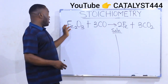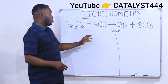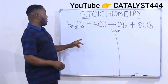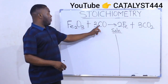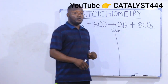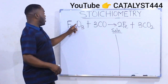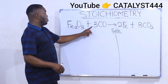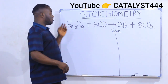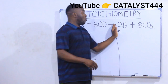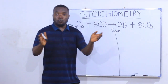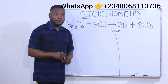On the left I have two iron ions; on the right I have two iron ions. On the left I have three carbons; on the right I have three carbons. On the left I have three plus three oxygens, which is six oxygens. So the equation is already balanced.